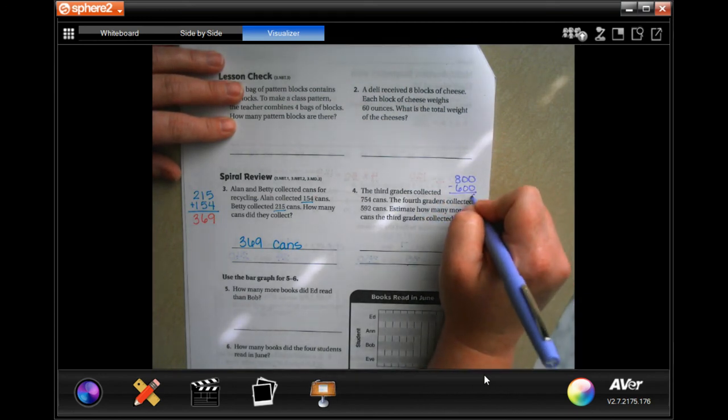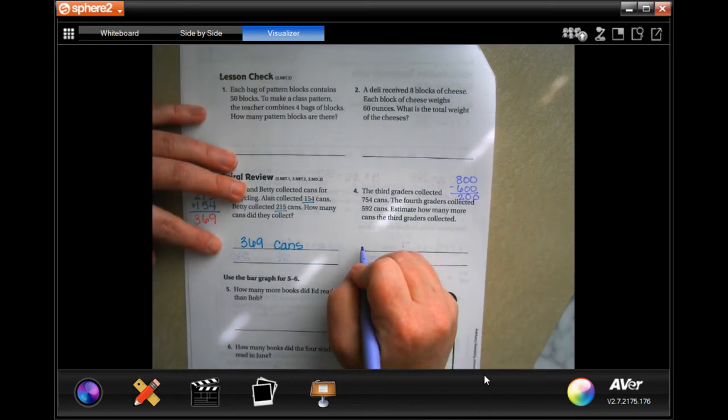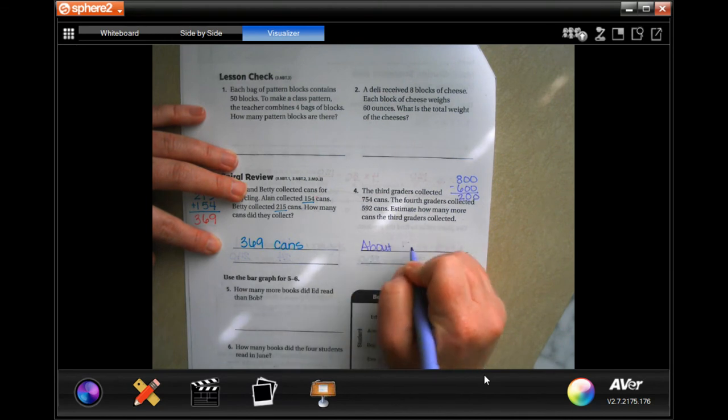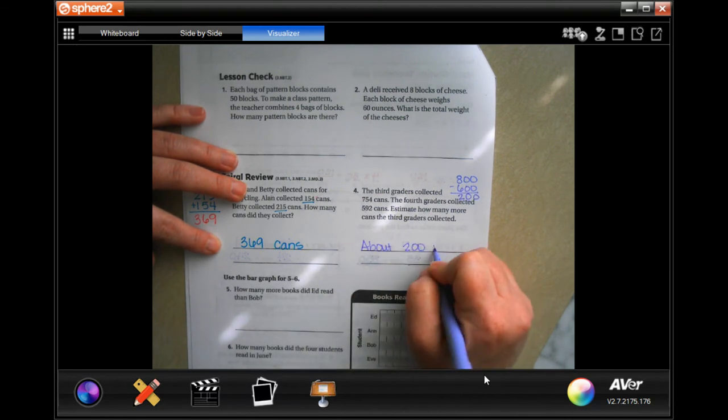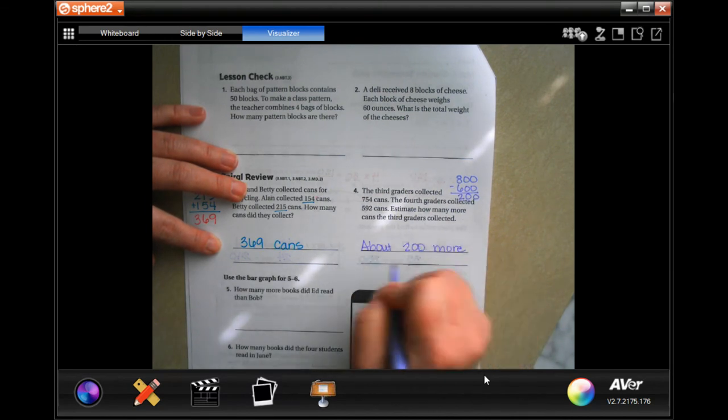And how many more means we have to find the difference. So 0 minus 0, 0 minus 0, and 8 minus 6 is 2. So about 200 more cans.